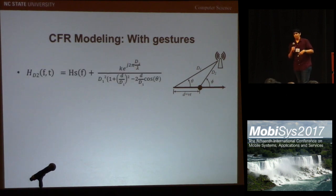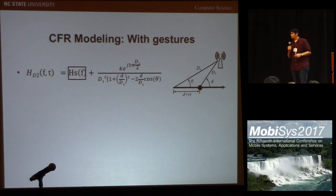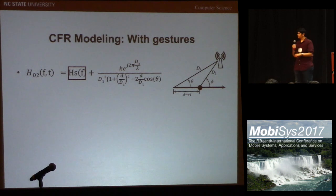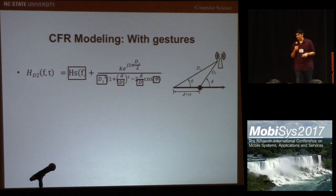Using the previous relationship, we can write the next CFR as an expression with two components. The first is the static component of CFR, which belongs to those paths that do not get affected by the user's motion — such as direct line-of-sight paths from source to receiver. If the user is not part of those paths, the CFR component from them will not be affected.